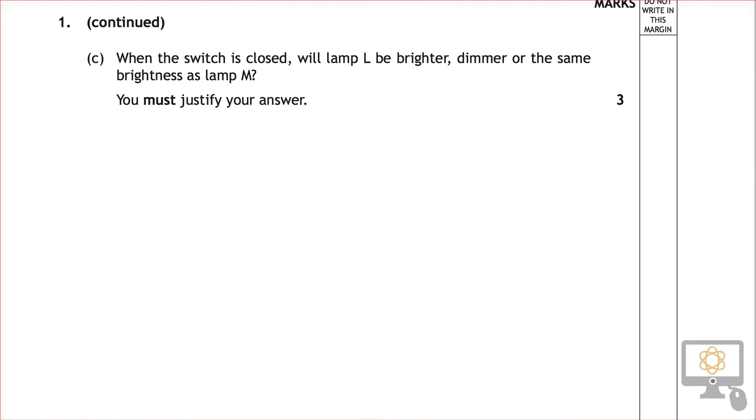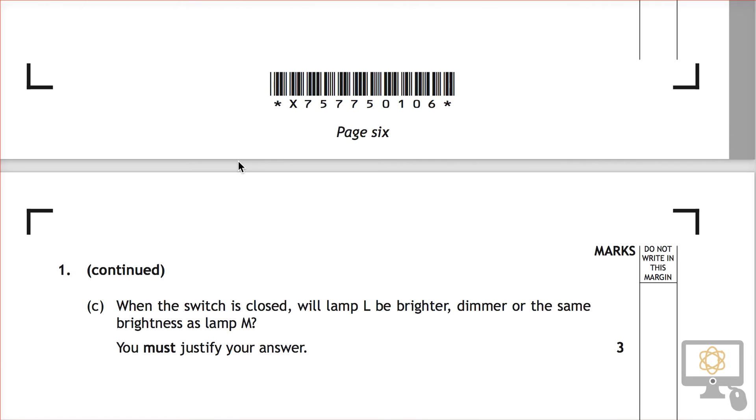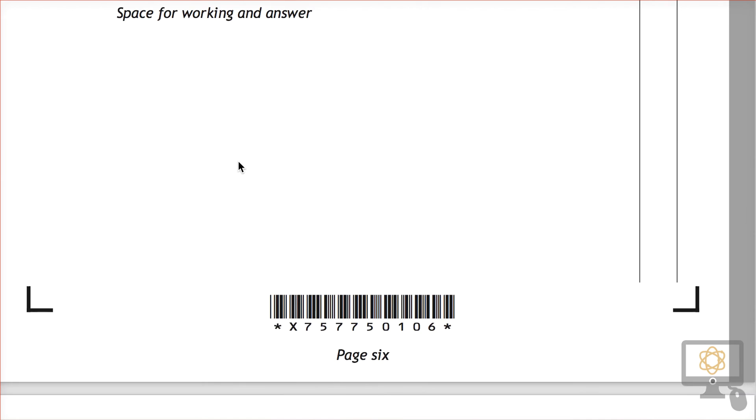Looking at question 1C from the National 5 2015 physics paper, it says when the switch is closed. Now let's go back up and have a look at what this actually means. When the switch is closed, lamp L will be brighter, dimmer or the same as lamp M. You must justify your answer.